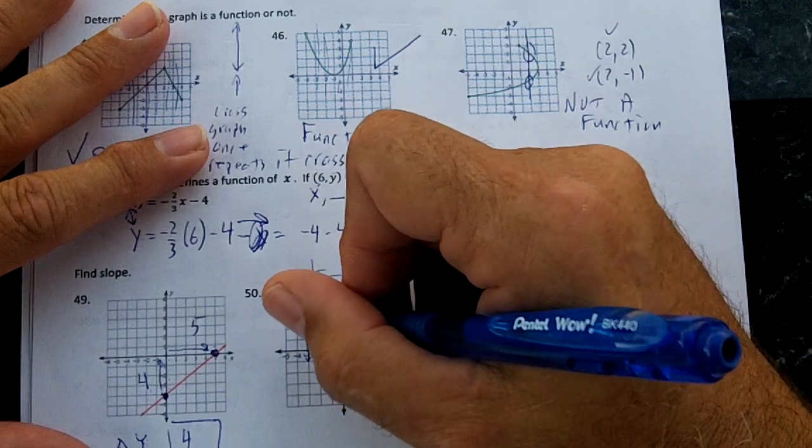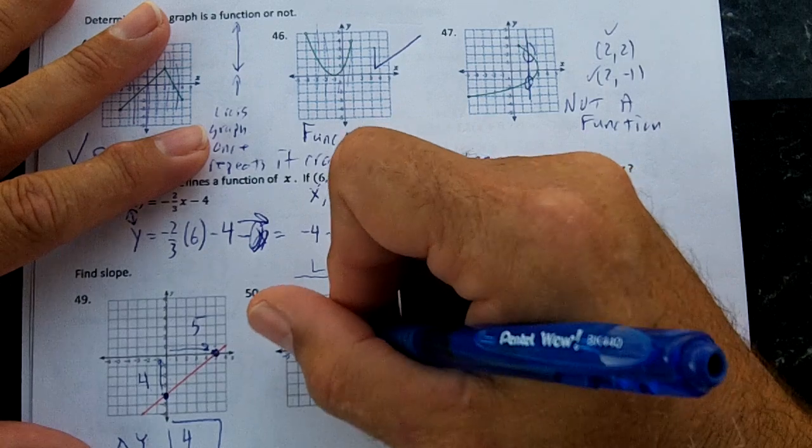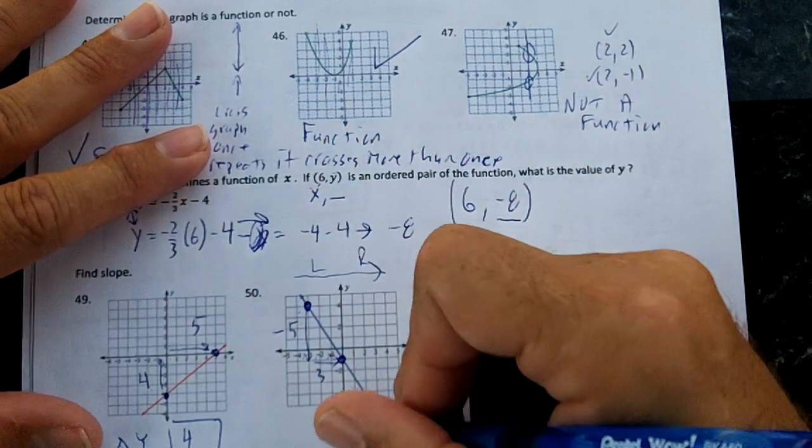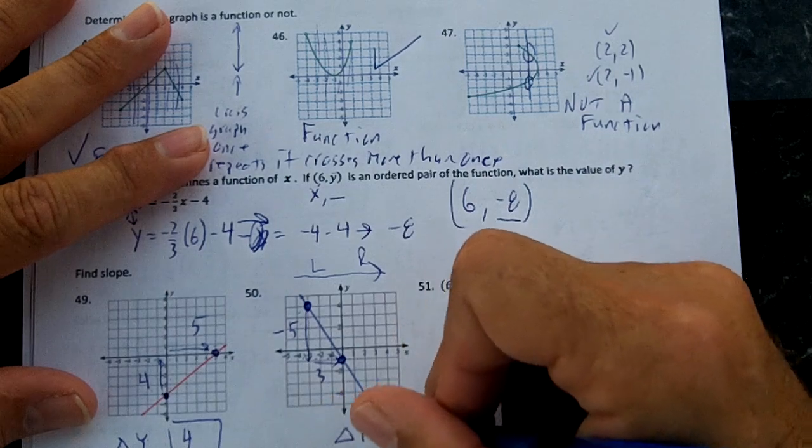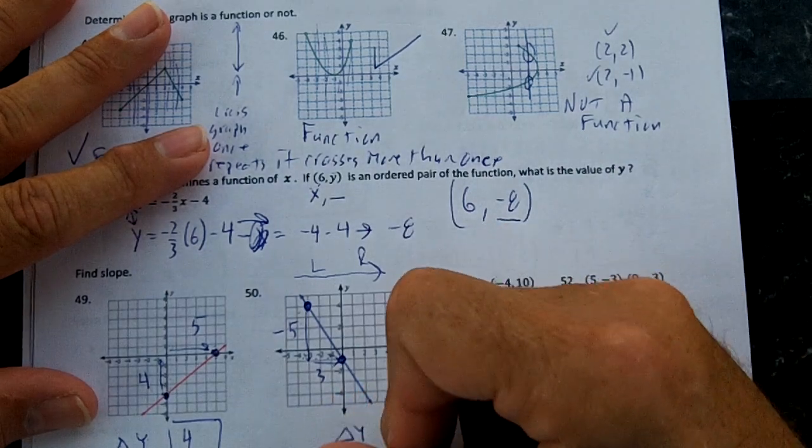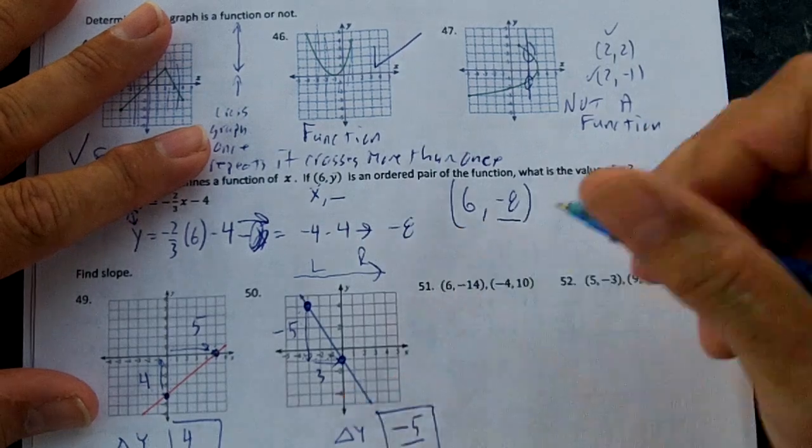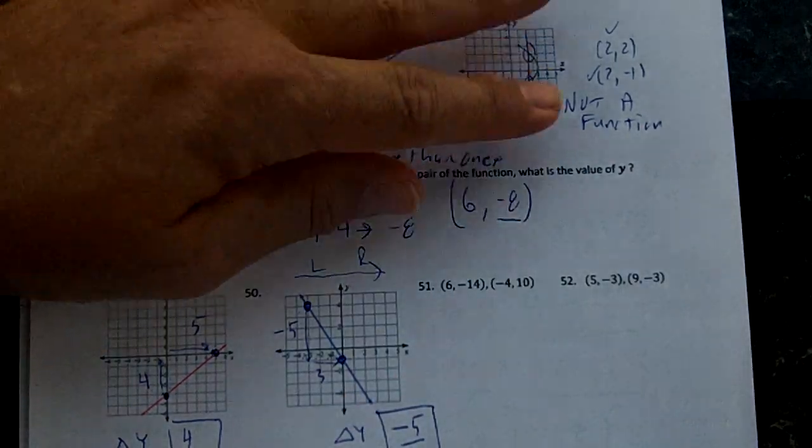So we went down 1, 2, 3, 4, 5 times. And we went over 1, 2, 3. So we went down. Our delta Y, our change in Y is negative 5. And our change in X is 3. So negative 5 over 3 is my slope.